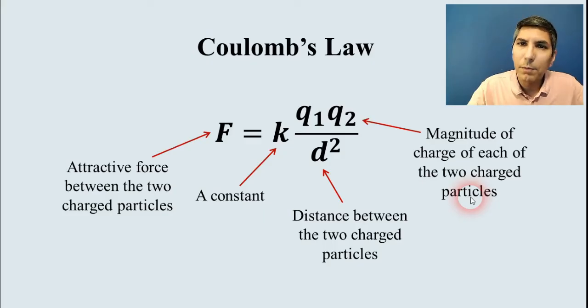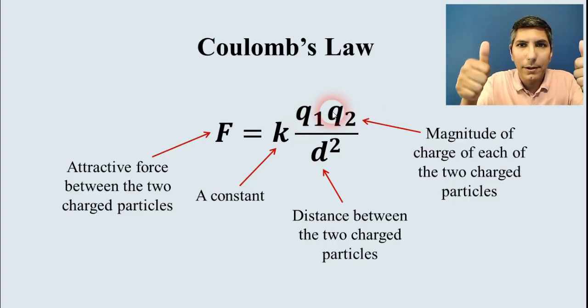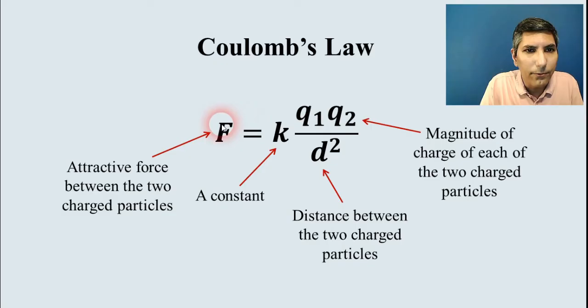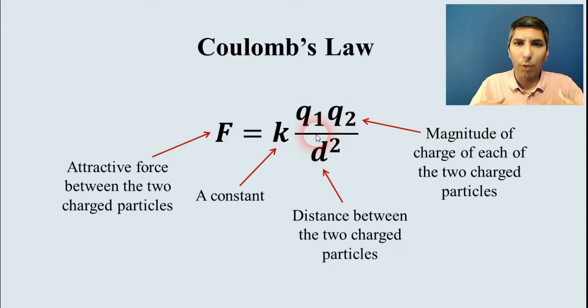But notice that we have two other types of variables here. We have the Q. Q1 and Q2 are the magnitude of charge of each of the two charged particles. And then the D stands for the distance between the two charged particles. Now, if we think about this from a mathematical point of view, you can see that if these values for Q go up, then the force goes up as well. So, what this tells us is more strong of a charge, greater magnitude of charge, means we have a stronger attractive force. So, that's why the plus 2 and minus 2 had a stronger attraction than the plus 1 minus 1, like we had in that example earlier.